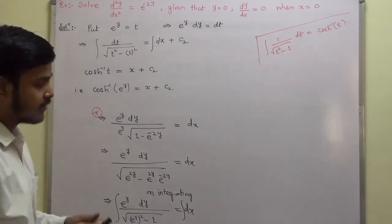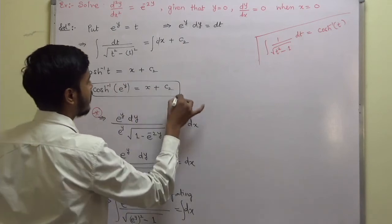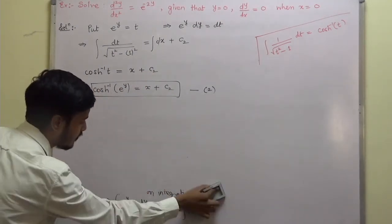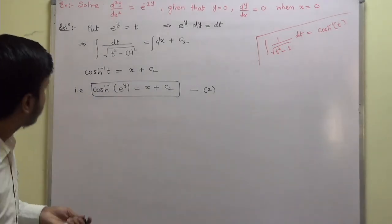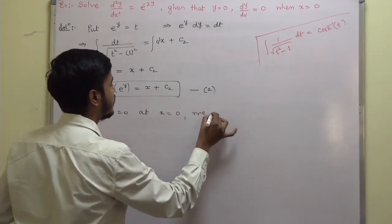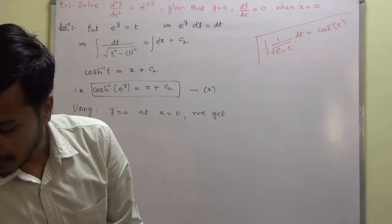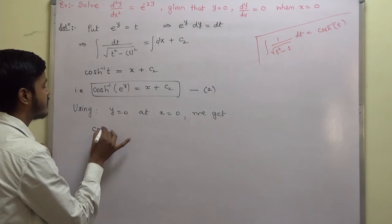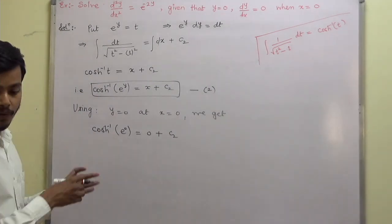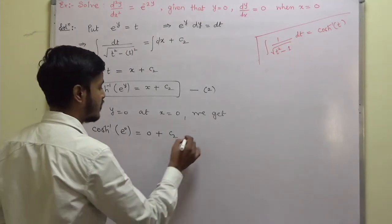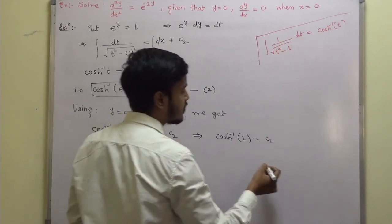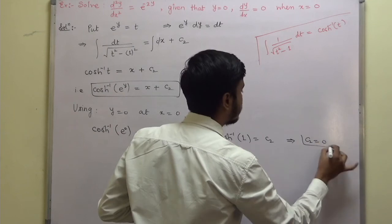Now applying the given condition y = 0 at x = 0 in equation 2, we get: cosh⁻¹(e^0) = 0 + c₂, so cosh⁻¹(1) = c₂. Since cosh⁻¹(1) = 0, this implies c₂ = 0.